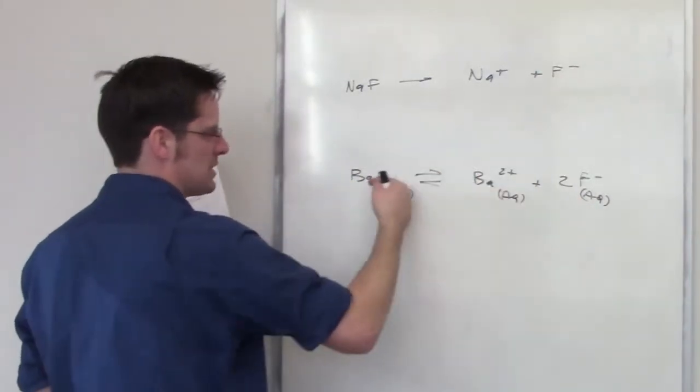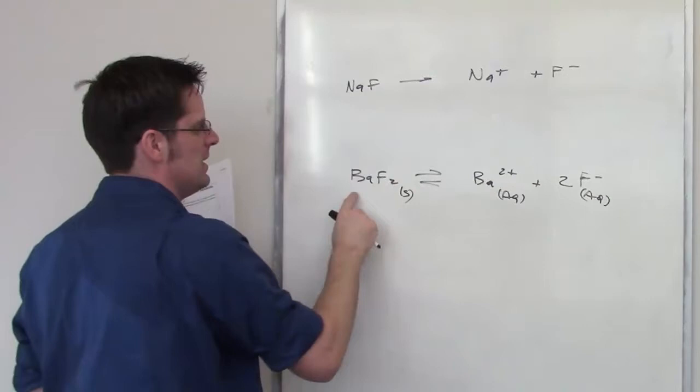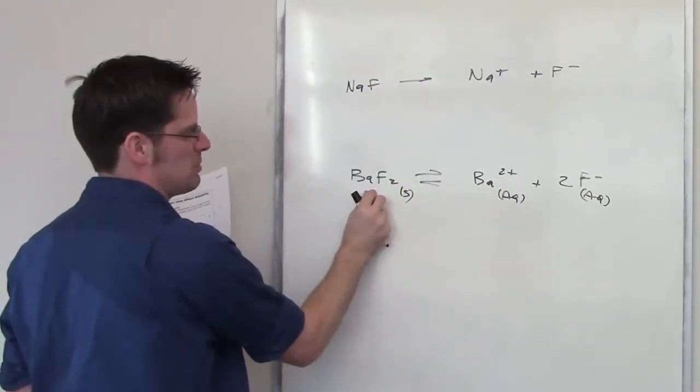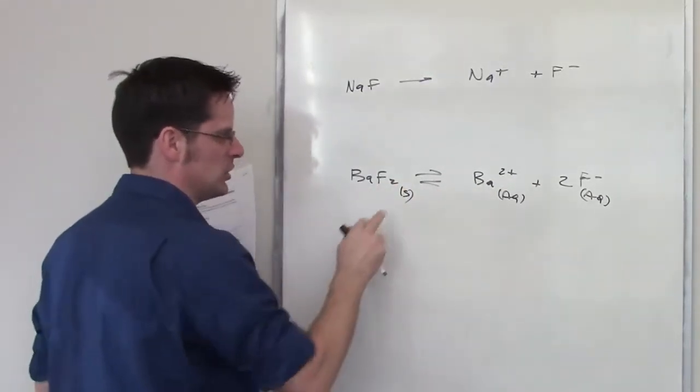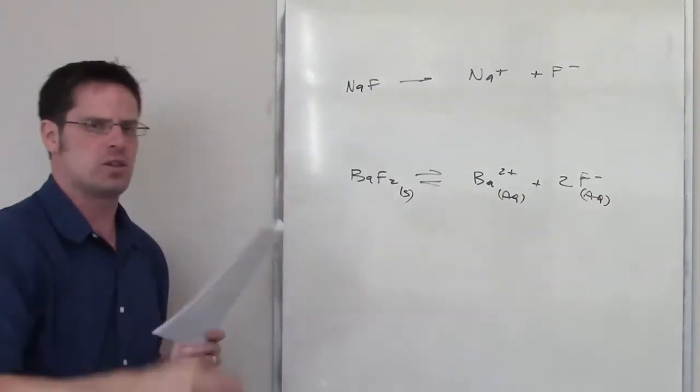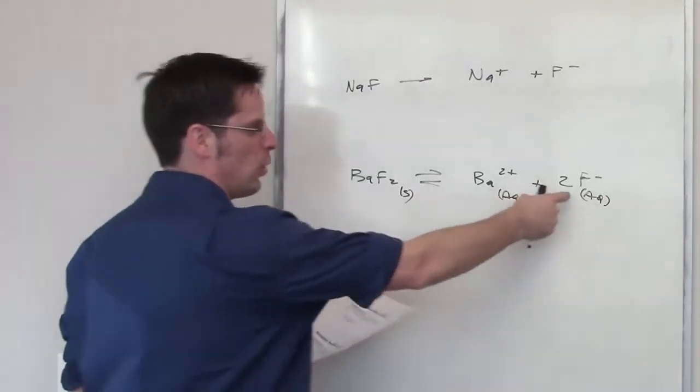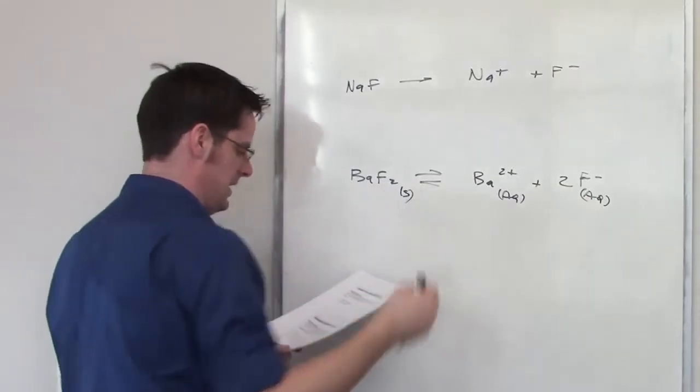It will continue pushing the equilibrium backwards until eventually we get enough that this becomes prevalent enough to precipitate out of solution as a solid. So the question is asking me how much fluoride do I have to add to make that take effect?